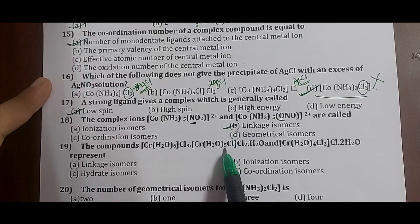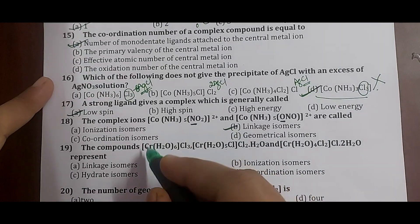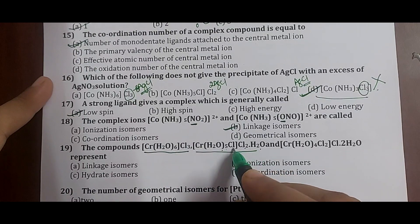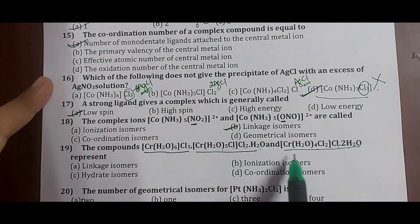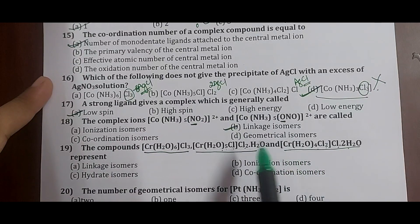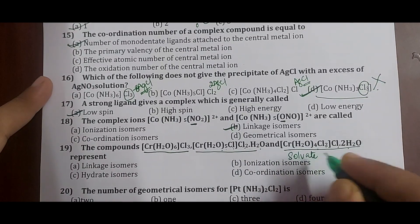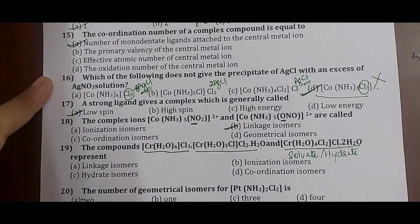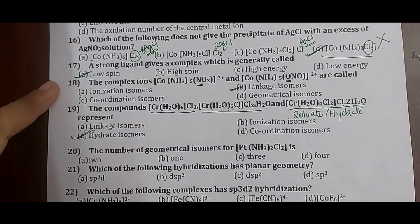Question 19: the compounds [Cr(H2O)6]Cl3, [Cr(H2O)5Cl]Cl2·H2O, and [Cr(H2O)4Cl2]Cl·2H2O represent what type of isomerism? All have one Cr, six water molecules total, and three Cl — same molecular formula — but differ in the number of water molecules within versus outside the coordination sphere. These are called solvate isomers or hydrate isomers. Correct answer: option C, hydrate isomers.